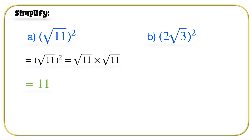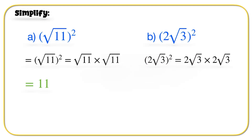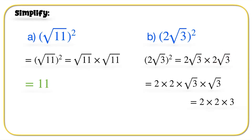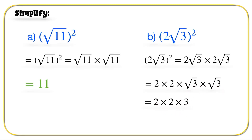For part B, we have 2 times 2 times root 3 times root 3. We've got 2 multiplied by 2, and root 3 multiplied by root 3. So we get 2 times 2 times 3 — remember, 3 comes from root 3 times root 3. And 2 times 2 times 3 gives us 12.